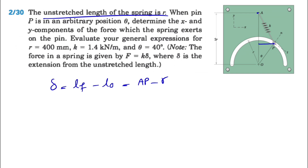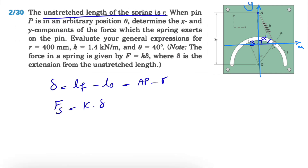We're going to connect point B to form a right triangle. Let's call this point B. What we need at the end is the force in this spring, which will be k times delta. Let's call the angle at A alpha. If we can find alpha, we know this will be our x-component and this will be our y-component. Once we figure out angle alpha, finding fx and fy is pretty easy.